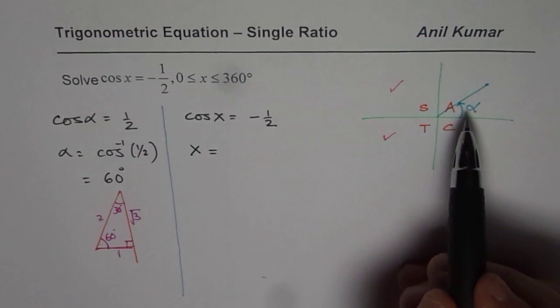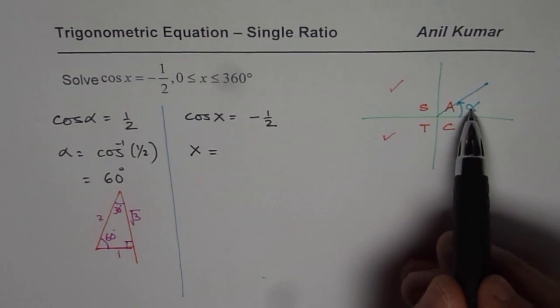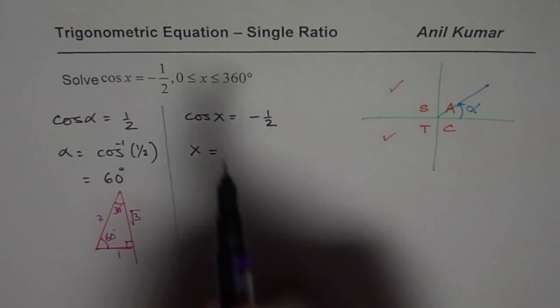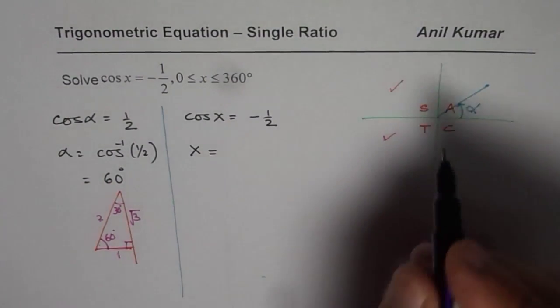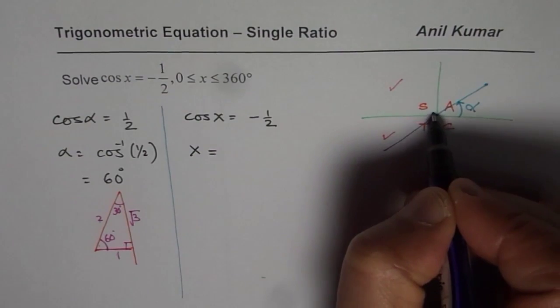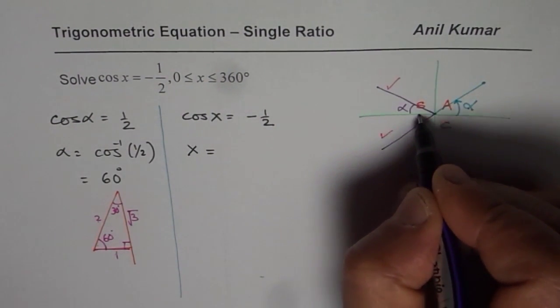So first step is to figure out which quadrant. We found that. Now find acute angle. We know that. And now the answer. The answer is for cos of x equals minus half, which is either in quadrant 3 or in quadrant 2. But the acute angle remains same. So this angle will remain same.